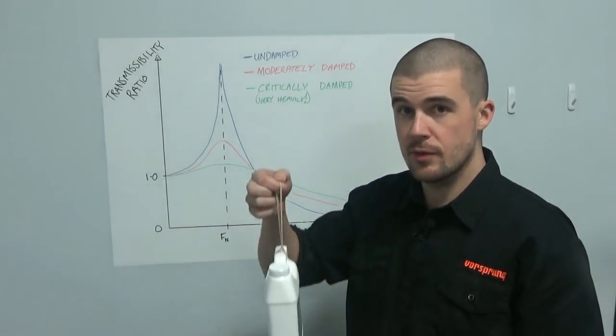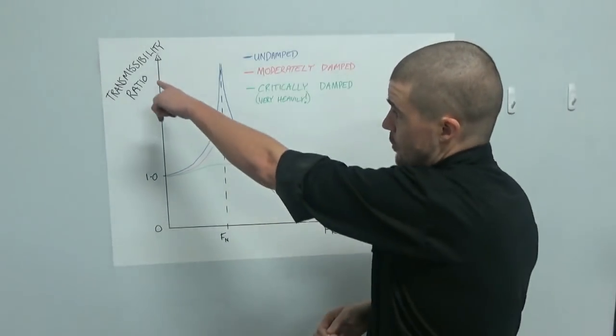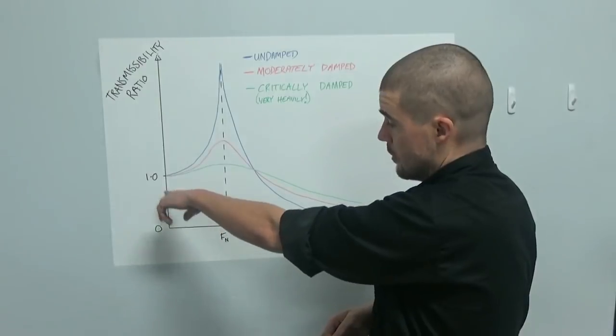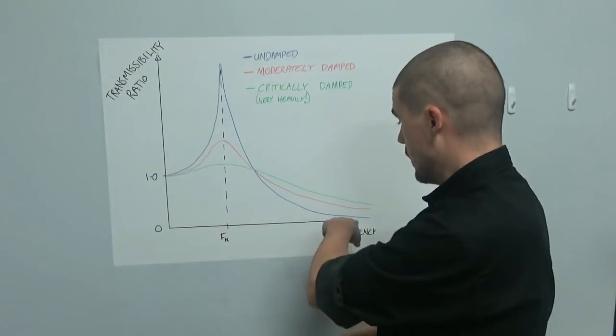As we get to higher and higher frequencies, what happens is that transmissibility ratio actually drops. It drops down closer and closer to zero, the higher this gets.